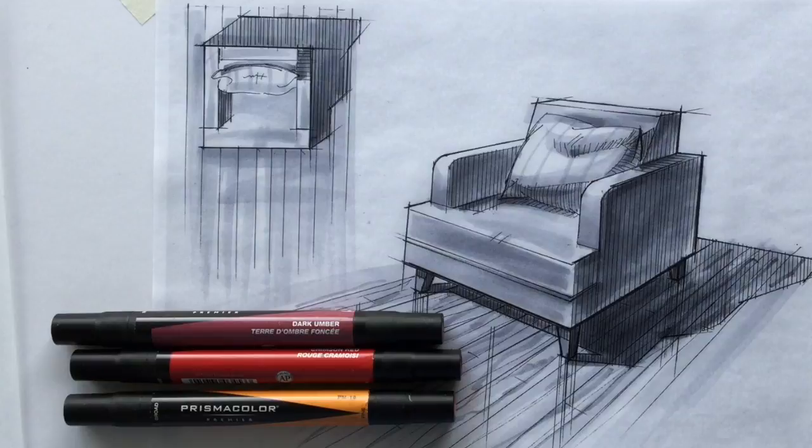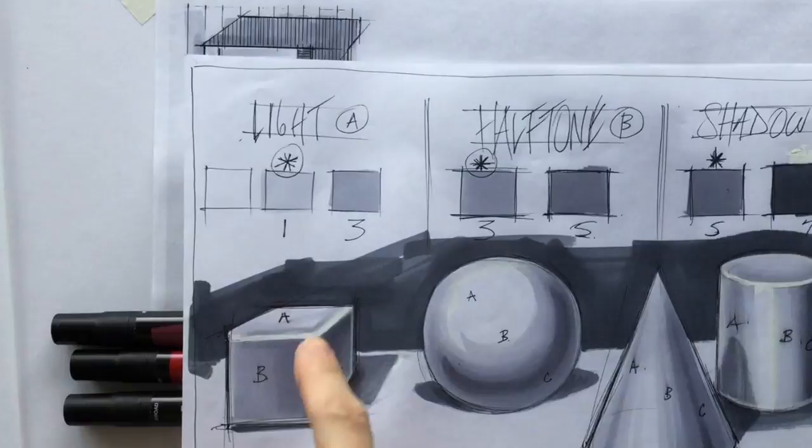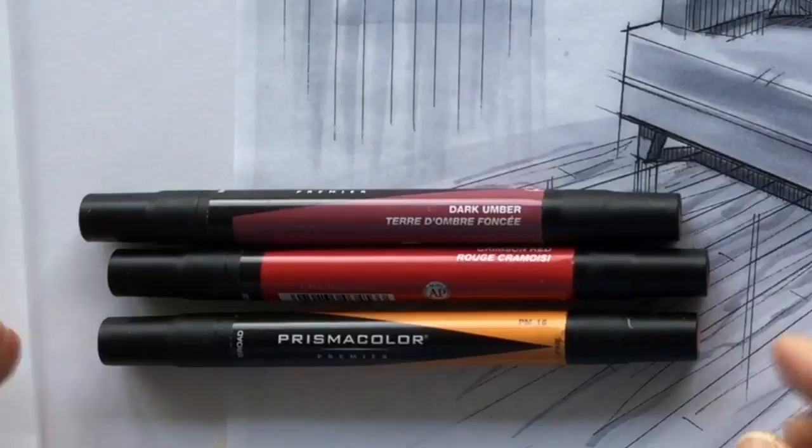Now, in order to render this in color, I need to prepare values. I've got to represent the chair: the light side of the chair, the middle value side of the chair, and the shadow side of the chair. So I have to mix up something with color in order to get that.